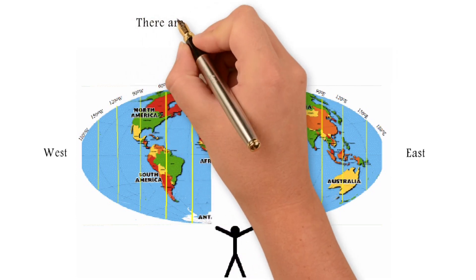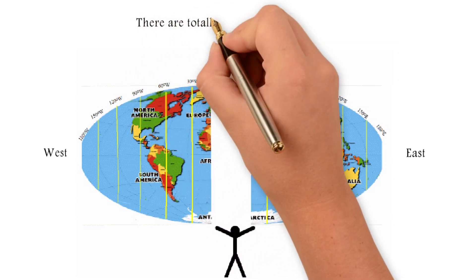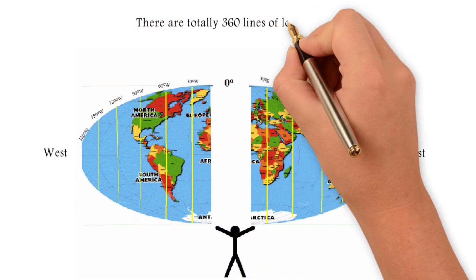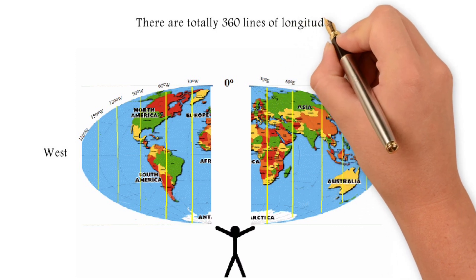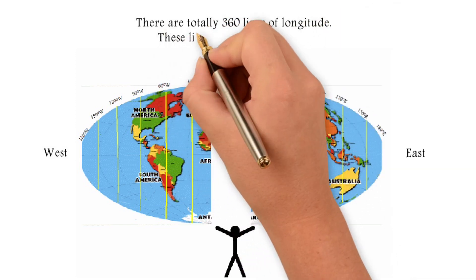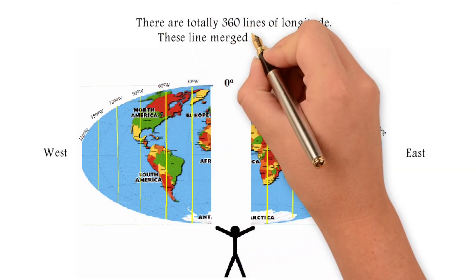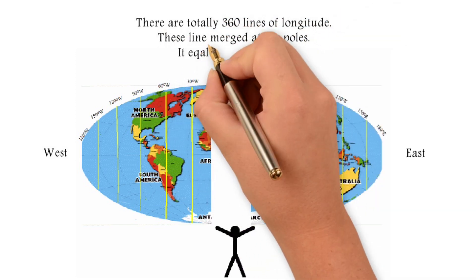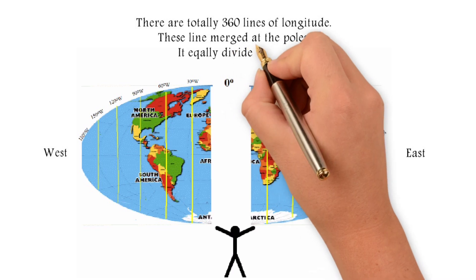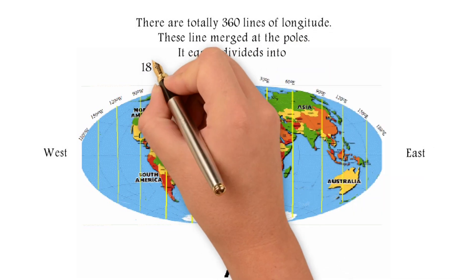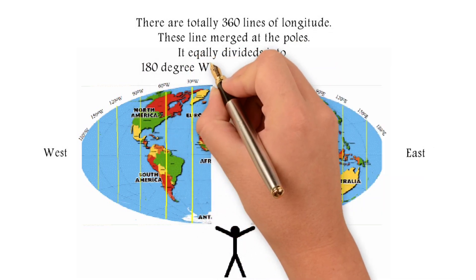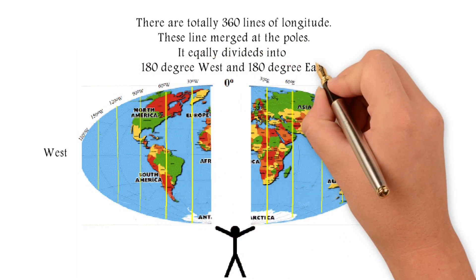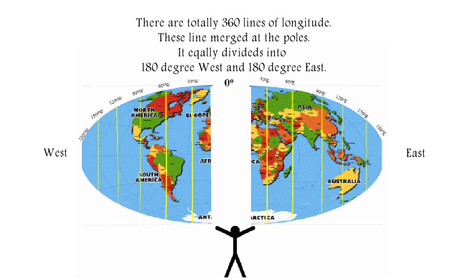There are totally 360 lines of longitudes. These lines merge at the poles, equally dividing into 180 degrees West and 180 degrees East.